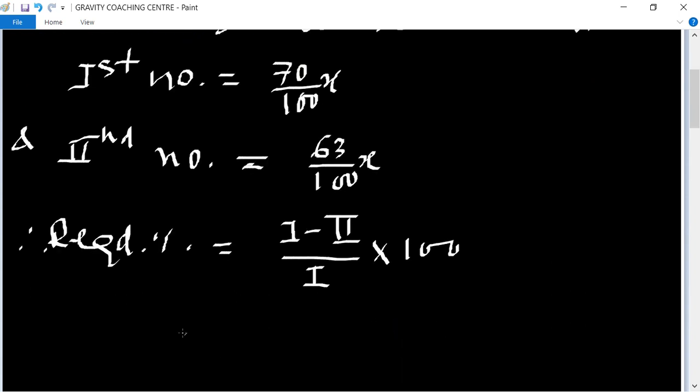So the first number is 70 upon 100 x minus the second number is 63 upon 100 x, divided by the first number 70 upon 100 x.